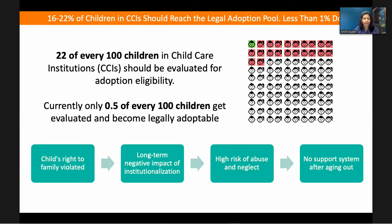To put this another way, 22 of every 100 children in child shelters should be evaluated for reaching the legal adoption pool, but currently less than 1 out of every 100 children gets evaluated and becomes legally adoptable. This has real-life consequences on vulnerable children.